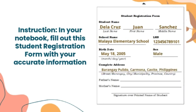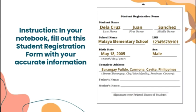You can now write your complete address, which should include street or barangay, city or municipality, province, and country — for example, Barangay Pulido, Carmona, Cavite, Philippines. Then write the name of your father and the name of your mother — for example, father's name: Jose C. De la Cruz; mother's name: Jocelyn S. De la Cruz. Never forget your signature over your printed name — write your name in all capital letters before signing.